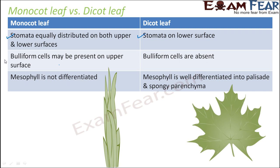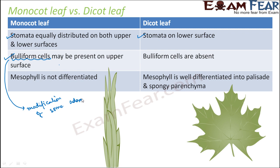Next, buliform cells may be present on the upper surface in monocot leaves — this is a new term. In monocot leaves such as grasses, some of the adaxial epidermal cells, that is the epidermal cells on the upper surface, modify themselves into large, empty, colorless cells called buliform cells. Buliform cells are essentially a modification of some adaxial cells.